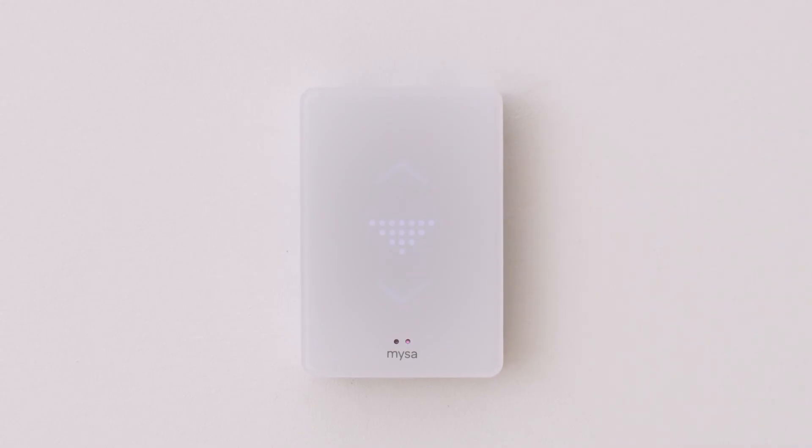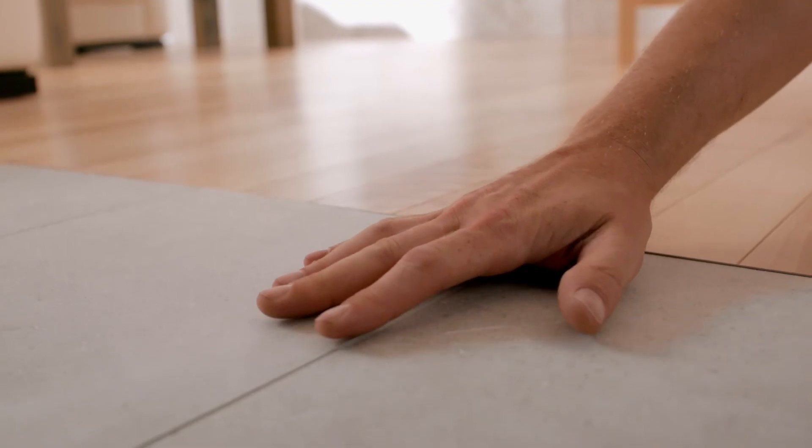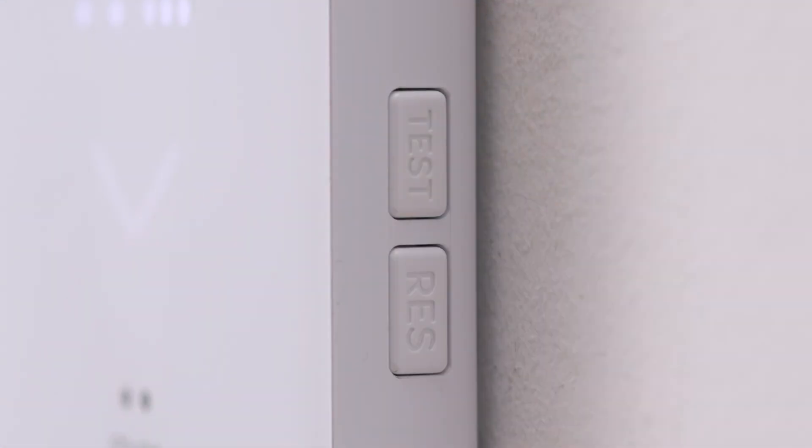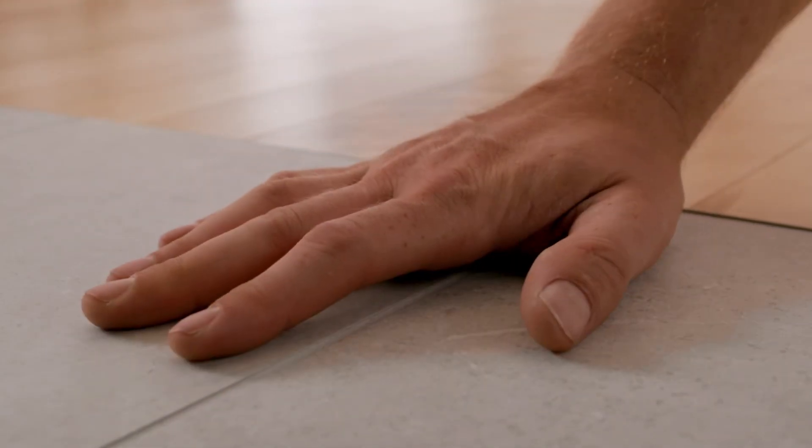It's important to test that the GFCI is working correctly so that it keeps you safe from potential electric shocks. First, verify the thermostat's fault light is off. If it's on, press the reset button. Turn the heater on to the maximum temperature setting and wait 10 minutes. Press the test button. If the fault light illuminates and after five to 10 minutes the floor heater cools off, you've installed the thermostat correctly. Press the reset button to end the test.